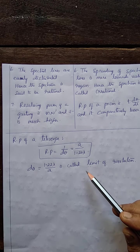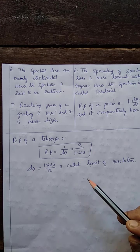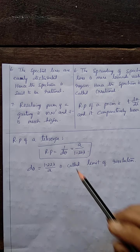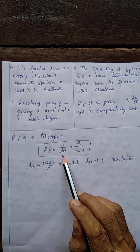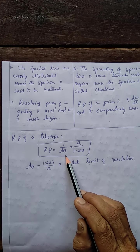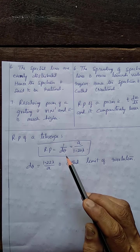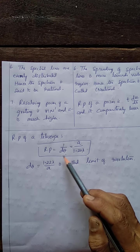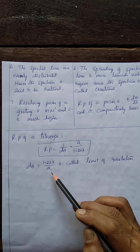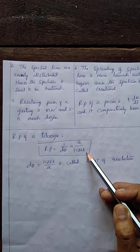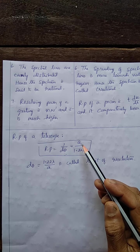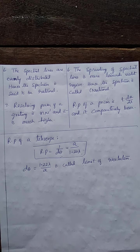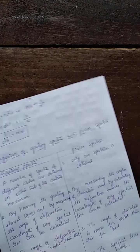The resolving power of a telescope is its ability to give separate images of two closely spaced distant objects. The resolving power is 1/dθ, where dθ is the limit of resolution — the angular separation between those two distant objects — given by 1.22λ/a, where λ is the wavelength of light and a is the aperture or diameter of the telescope. With this, we have finished the second unit on polarization and diffraction.